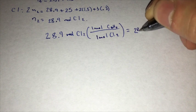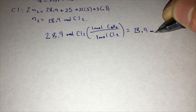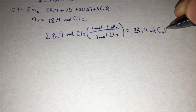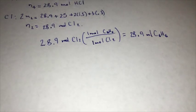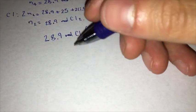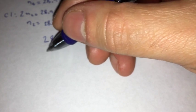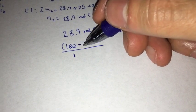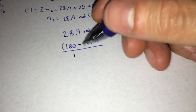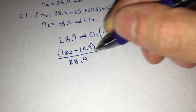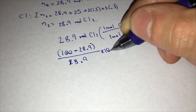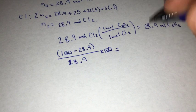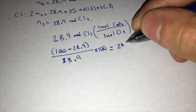And now we calculate the excess percent by doing 100 minus 28.9 over 28.9 times 100, and that will give us our percent which is 246.